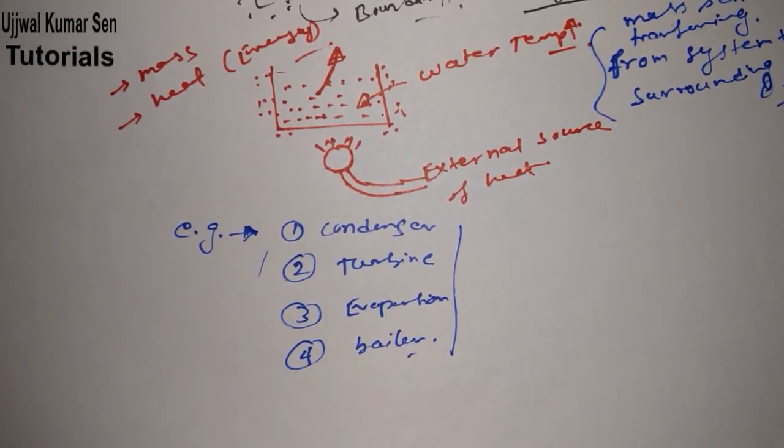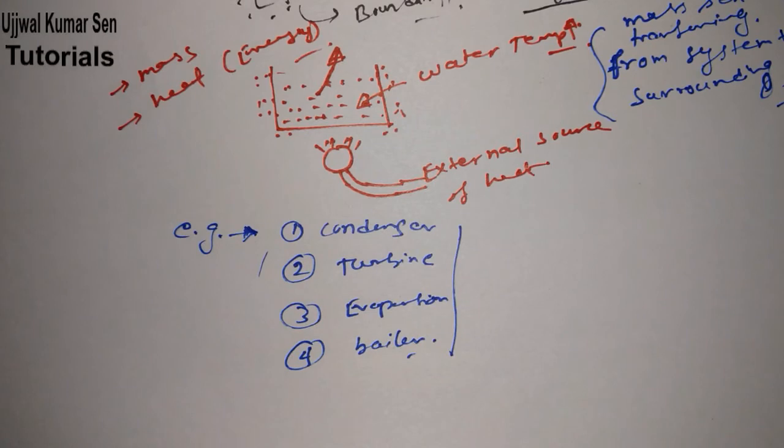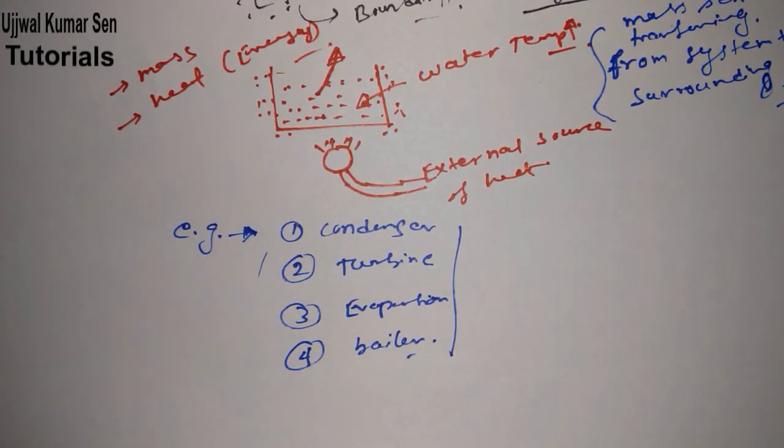I've already created about system, surrounding, types of system. That's why you can understand much better way about system. The example of closed system is a piston cylinder arrangement without valve.